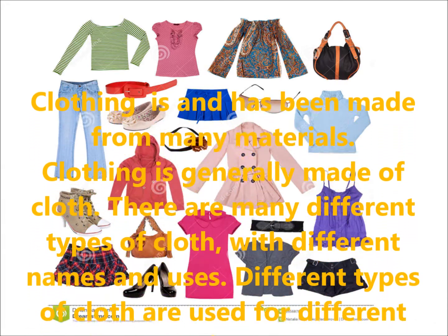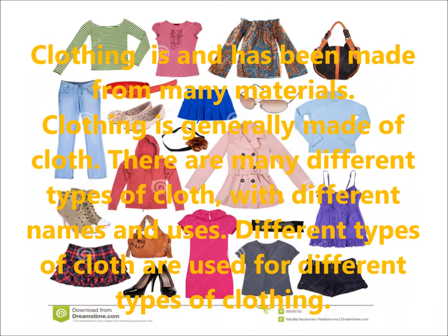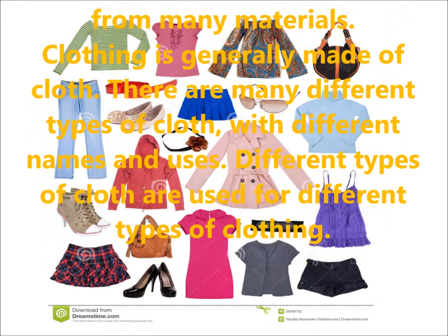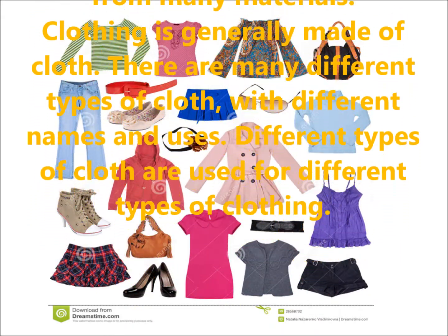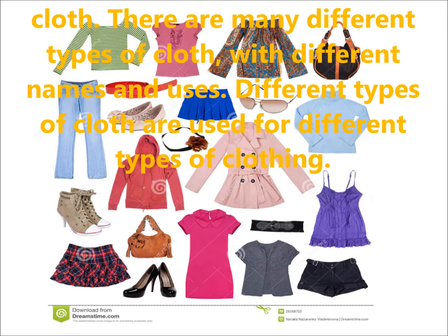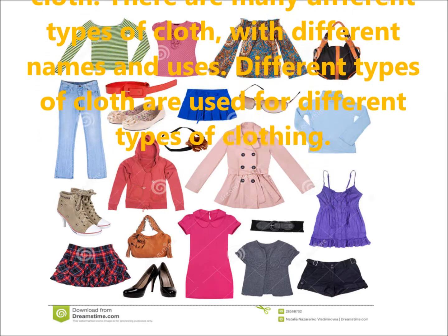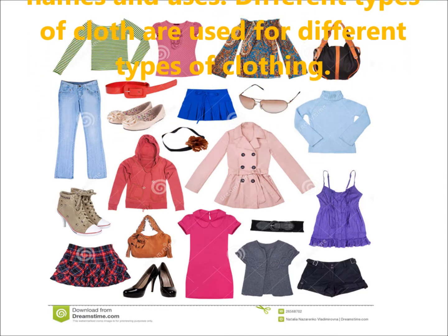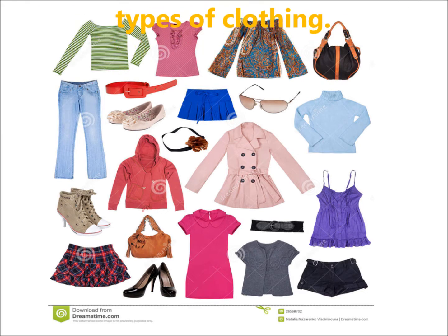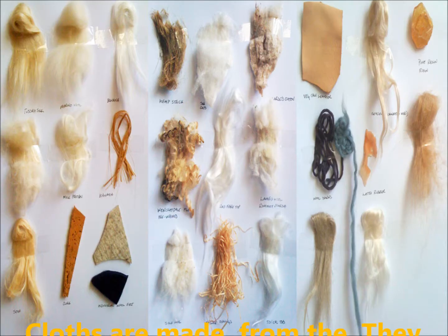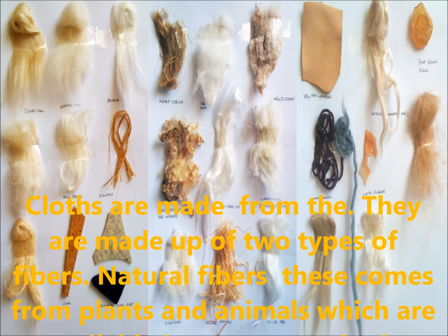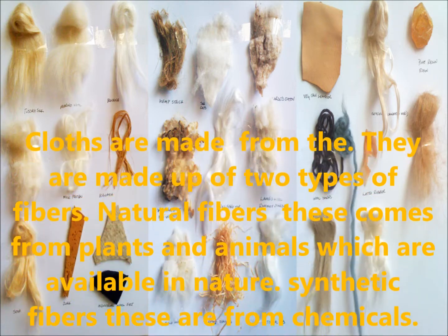Clothing has been made from many materials throughout history. There are different types of clothes with different names and uses, used for different types of clothing. Cloths are made from fibers. There are two types of fibers: natural fibers and synthetic fibers.